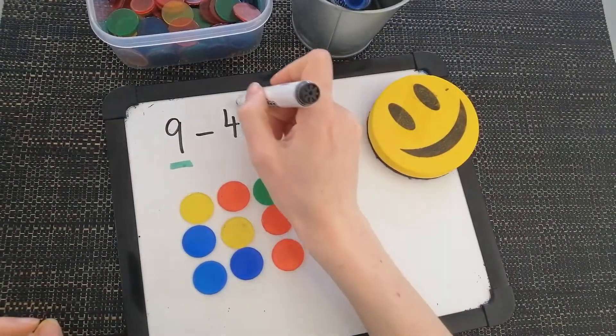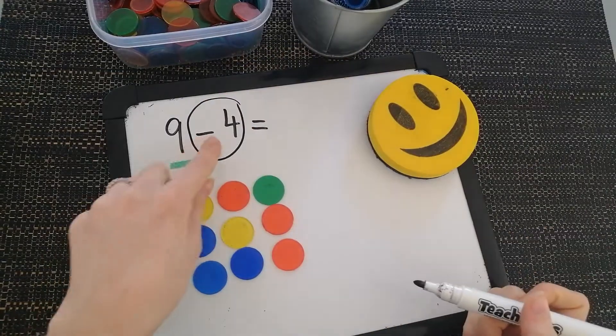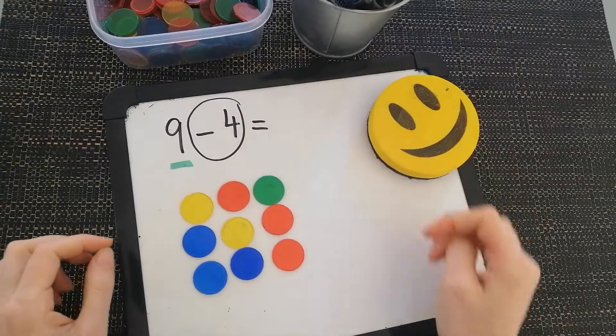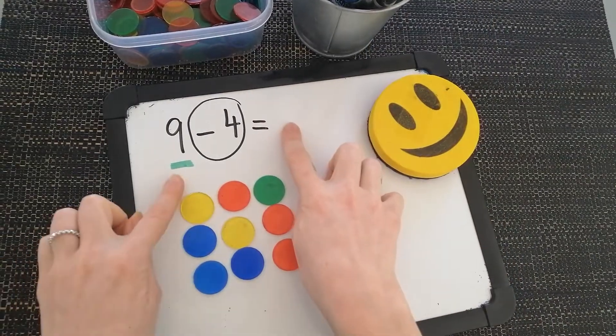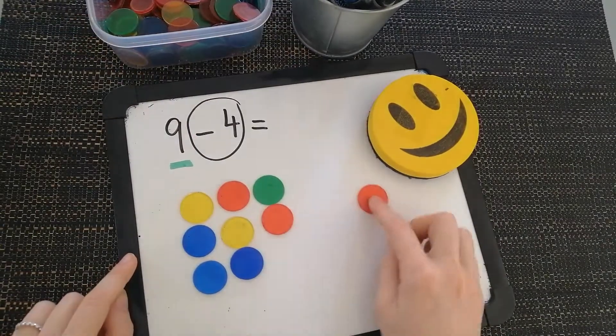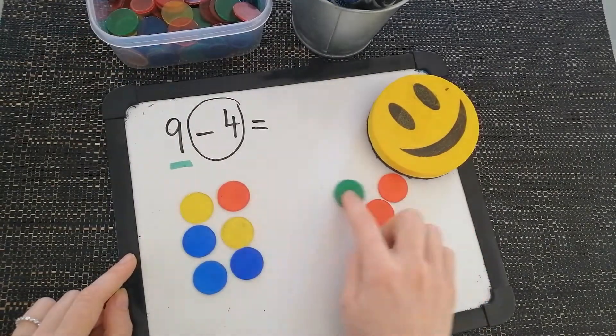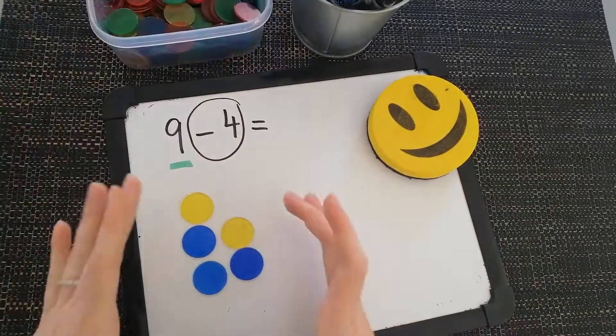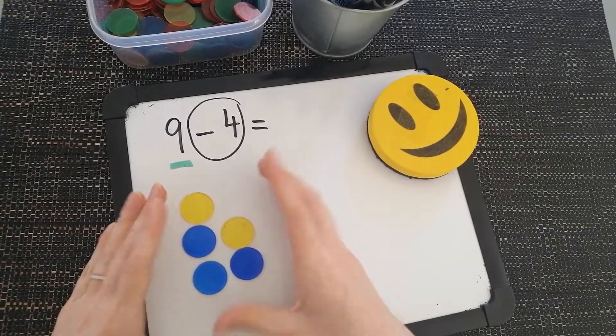Then I need to take away 4. I am subtracting 4 from the counters I've already got because I need to end up with a smaller number than what I started with. So I'm going to take 4 of them away and put them back. 1, 2, 3, 4. Taken 4 away and now I have a smaller number left over.